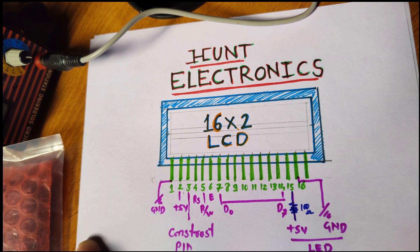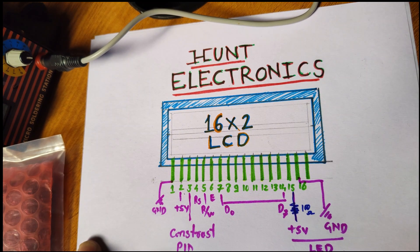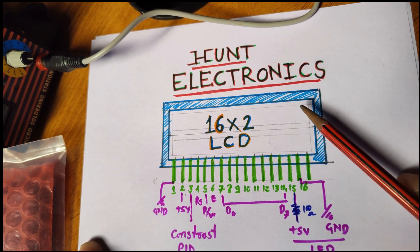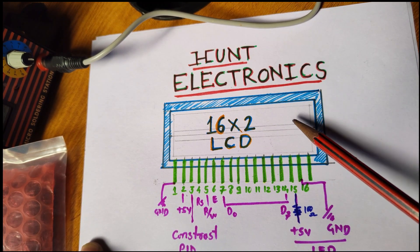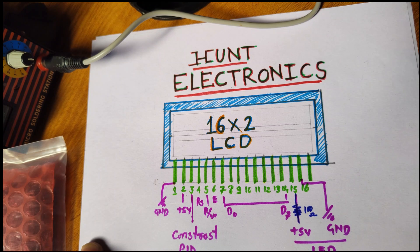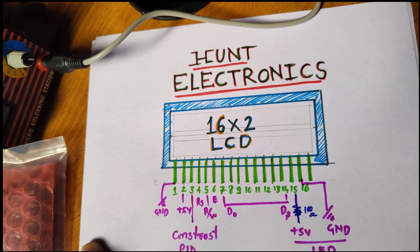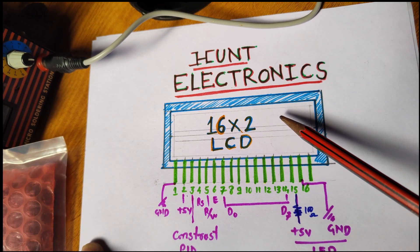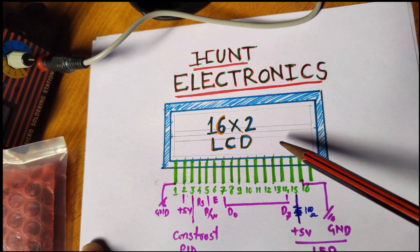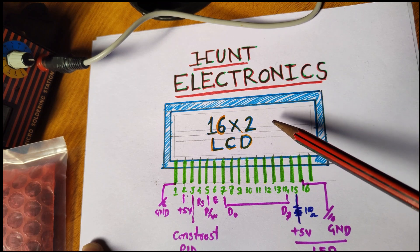Before going for soldering and interfacing, let us study some points about the 16 by 2 display. This is called a 16 by 2 display because it can display at a time 32 characters - 16 in upper row and 16 in bottom row.